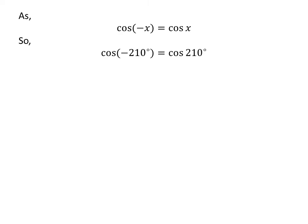Let us apply the above identity. For cosine of minus 210 degrees, x is 210 degrees. So, cosine of minus 210 degrees is equal to cosine of 210 degrees.